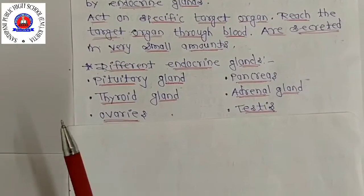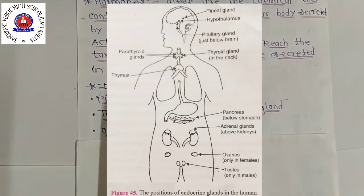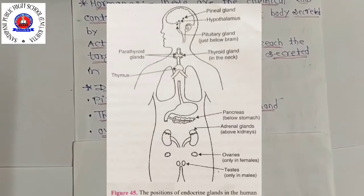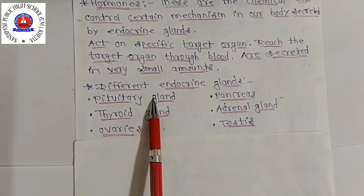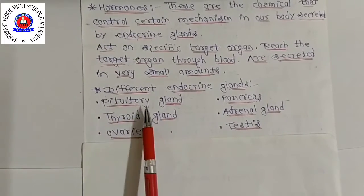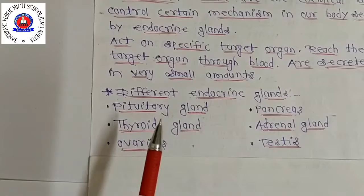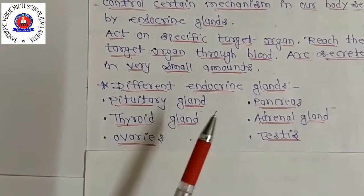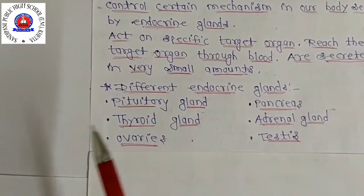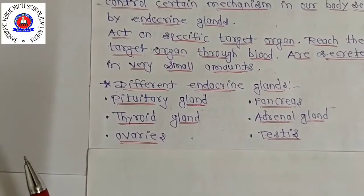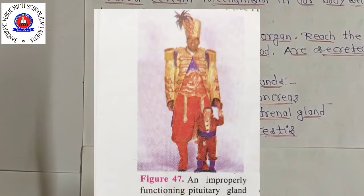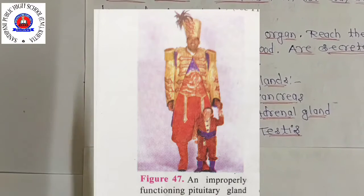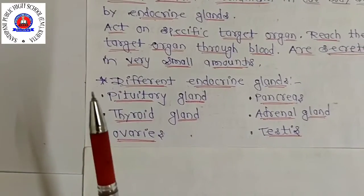The pituitary gland is present just below the brain and secretes a number of hormones. One of the hormones secreted by the pituitary gland is growth hormone, or human growth hormone, which controls the growth of the human body — including the development of bones and muscles. A person having a deficiency of growth hormone in childhood remains very short and becomes a dwarf. On the other hand, a person having too much growth hormone becomes very tall.